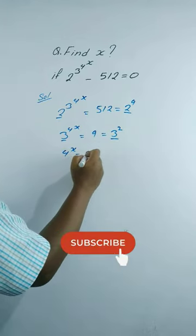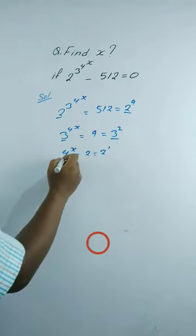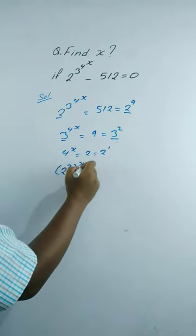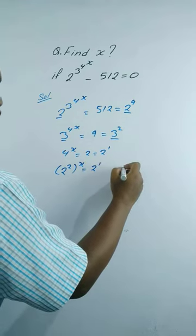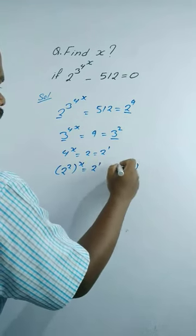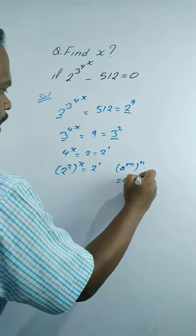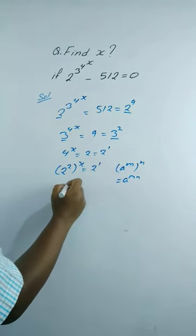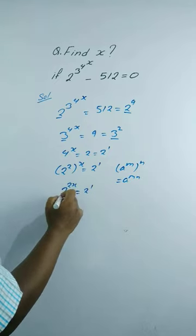We can write 2 as 2 to the power 1. We can write 4 as 2 squared, whole to the power x, equals to 2 to the power 1. Using the exponential rule — a to the power m, whole to the power n, equals to a to the power mn — we can write this as 2 to the power 2x equals to 2 to the power 1.